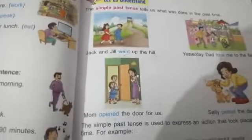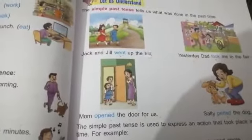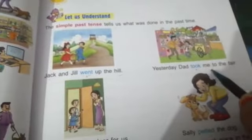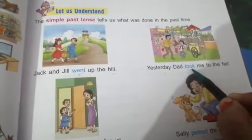Let's have few examples here. Jack and Jill went up the hill. So here went is the past form of go. Yesterday, dad took me to the fair. Here, took is the past form of take.